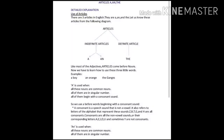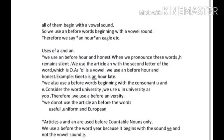When we pronounce 'are' and 'honest', H remains silent. We use the article AN with the second letter of the word, which is O. As O is a vowel, we use AN before 'are' and 'honest'. Example: Gita is an orlate. We also use A before words beginning with the consonant sounds U and E. Consider the word 'university' — we read U in university as 'yoo'. Therefore we use A before 'university'. We do not use AN before 'useful', 'uniform', and 'European'.